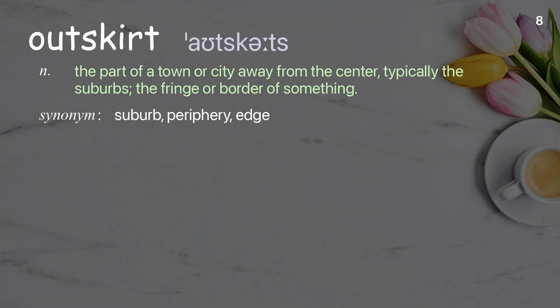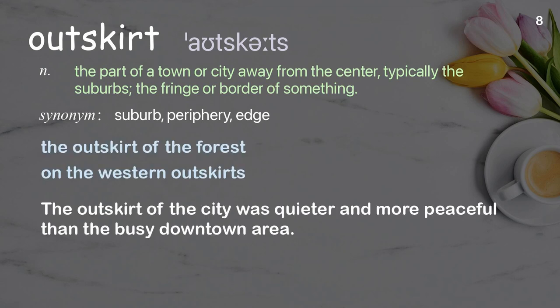Outskirt: the part of a town or city away from the center, typically the suburbs, the fringe, or border of something. Examples: the outskirt of the forest; on the western outskirts; the outskirt of the city was quieter and more peaceful than the busy downtown area.